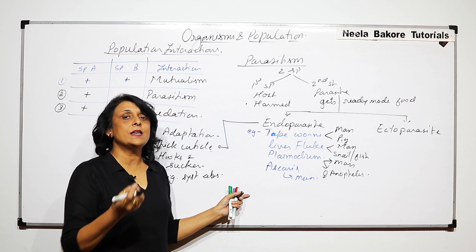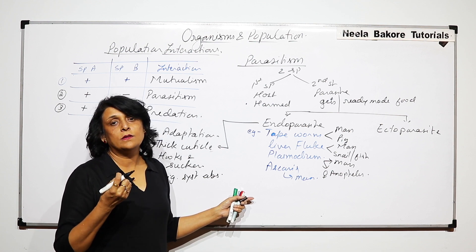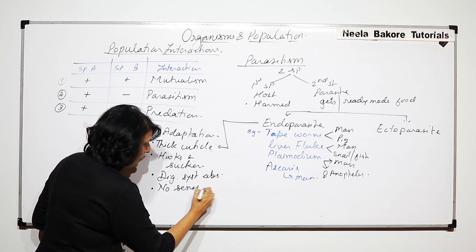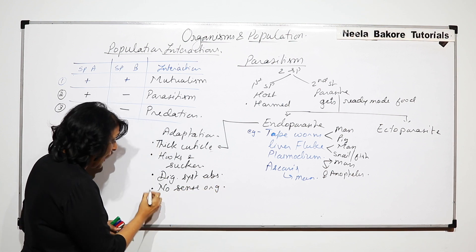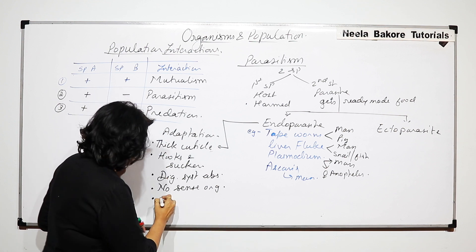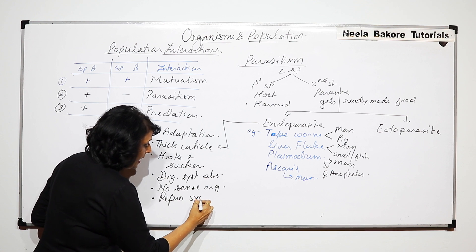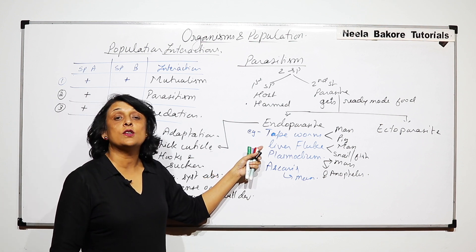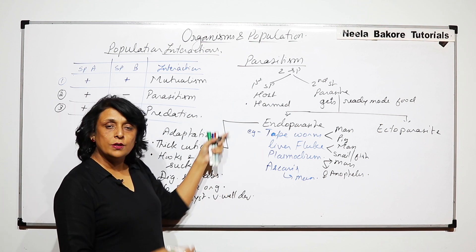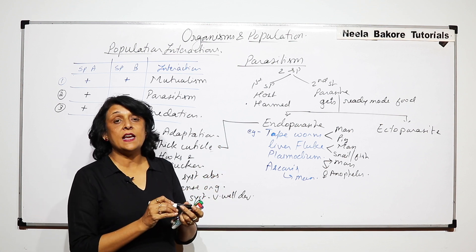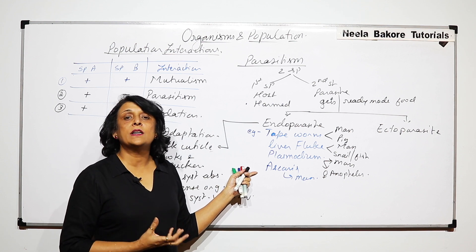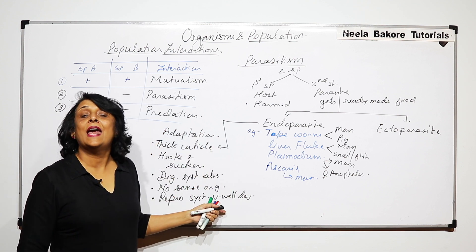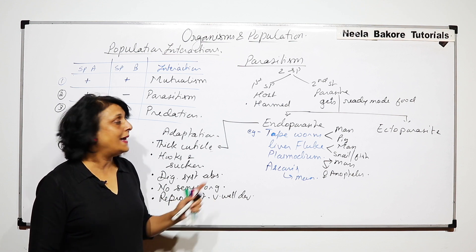Endoparasites also have no sense organs — they don't need to respond to sound, light, or other stimuli inside the host body. Their main purpose is to reproduce, so the reproductive system is very well developed. For liver fluke and Plasmodium, the body structure is not as complex, but the life cycle is very complex. Ascaris also has adaptations to protect itself from digestive enzymes and chemicals.